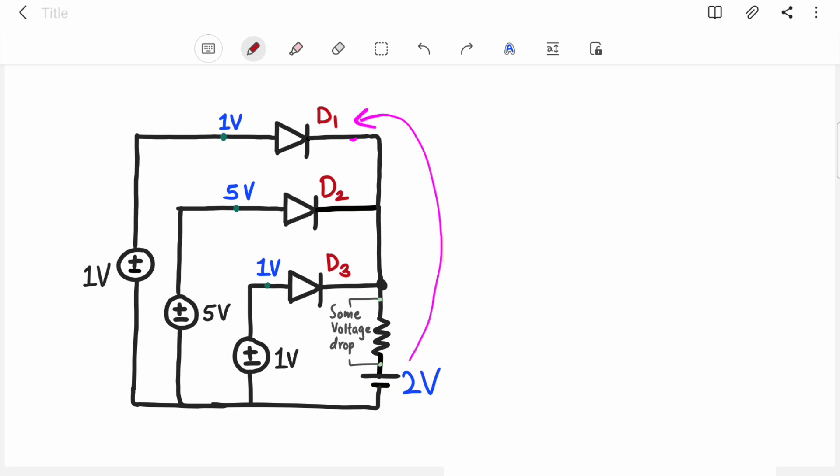So let's consider 2 volts are coming across n terminal of diode D1. So Vn is greater than Vp, so it will be reverse biased, it will act as open circuit. So diode D1 will not conduct.